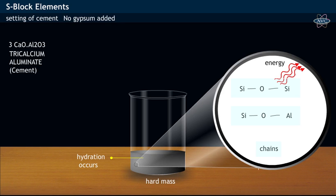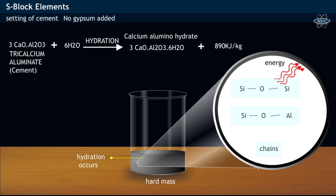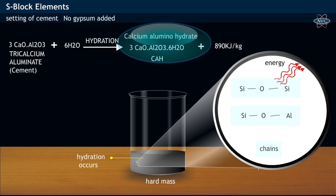then calcium aluminate of cement quickly reacts with water, that is undergoes hydration, and results in the formation of calcium aluminum hydrate abbreviated as CAH. This compound will destroy usage of cement.